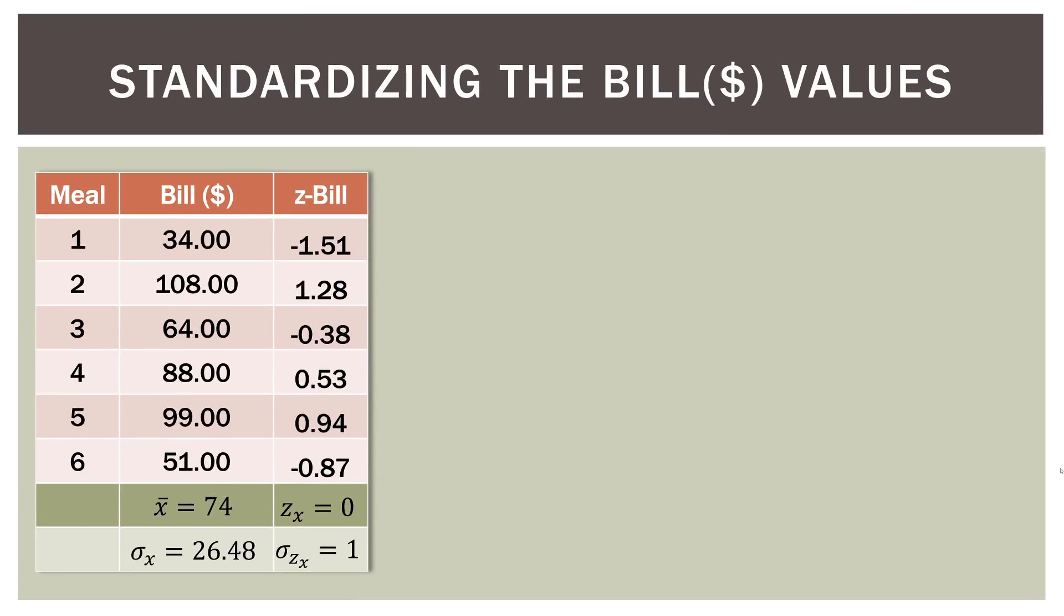So now let's get to the heart of what this video is about. First thing we're gonna do is standardize the bill amount values. So remember, when we standardize the value, all we're doing is taking that value, we subtract the mean, and then divide that difference by the standard deviation. So here for meal one, we have a bill amount of $34. We're gonna subtract the mean bill amount, which is $74, and then divide by the standard deviation, which is 26.48. And then we're going to get a z-score of negative 1.51.